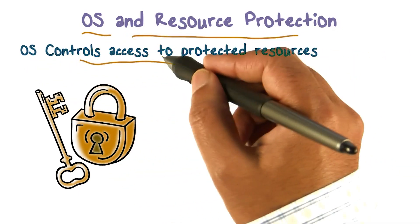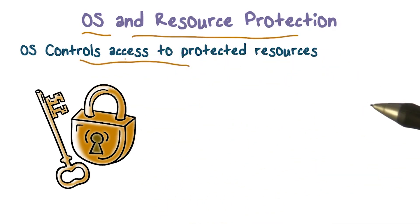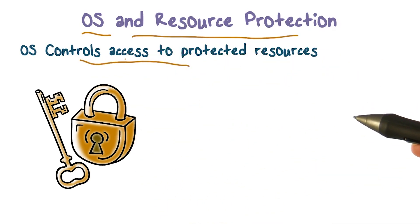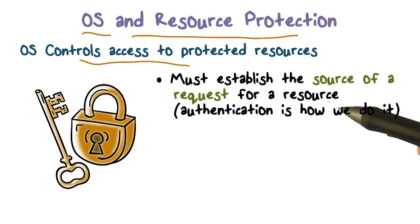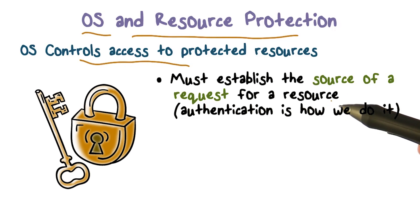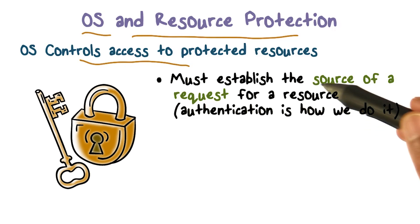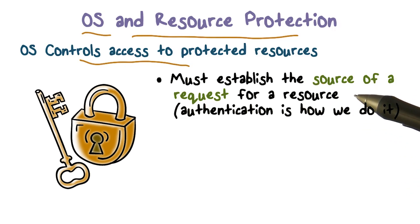And when they come through the operating system, the operating system is going to be able to say whether this is okay, or it's not going to allow or grant access, or it's going to deny this particular request. So how does the operating system actually mediate these requests for various resources that need to be protected?